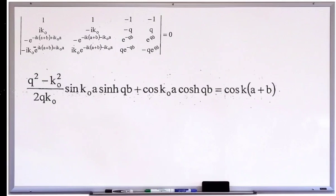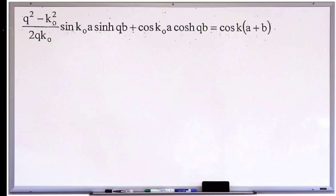I will get q² minus k₀² divided by 2qk₀ multiplied with sin k₀a sinh qb plus cos k₀a cosh qb equal to cos k(a+b). Since we are continuing from part 1, this equation can be taken as equation number 19.